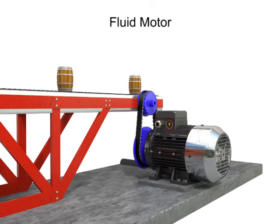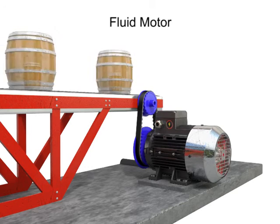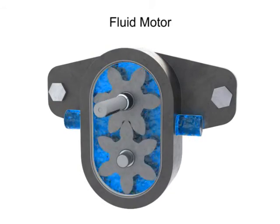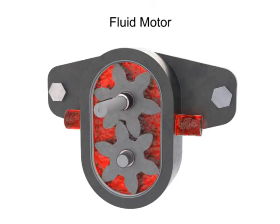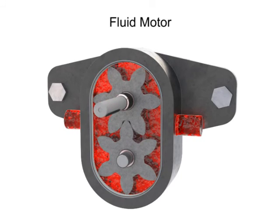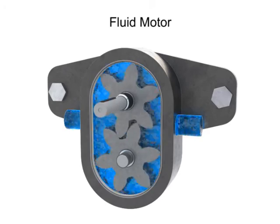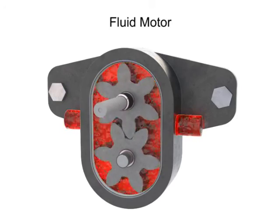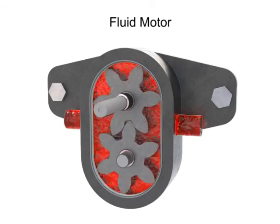Fluid motors have many advantages over typical electric motors. An electric motor can be prone to overheating, especially if it experiences higher than normal loads. Fluid motors, on the other hand, will simply stall and come to a stop if they are overloaded. Once the motor stops, the fluid begins to cool down. Additionally, unlike an electrical motor, fluid motor speed can be made responsive to its fluid temperature. If a sensor detects an increase in fluid temperature, the speed of the motor can be directed to reduce.